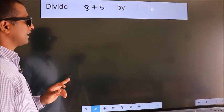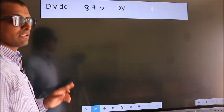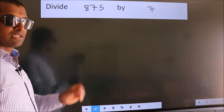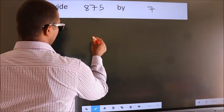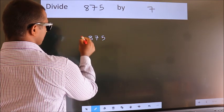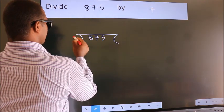Divide 875 by 7. To do this division, we should frame it in this way: 875 here, 7 here.